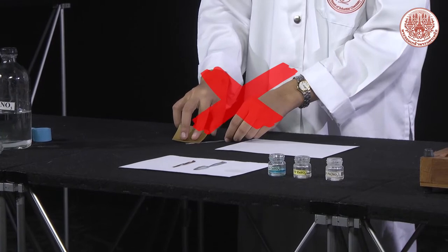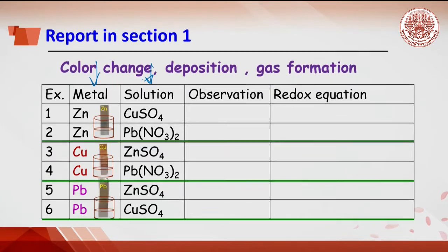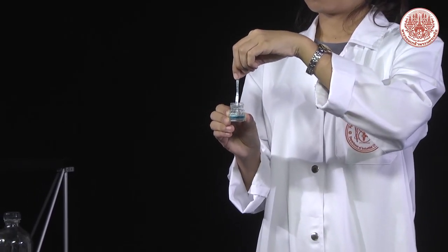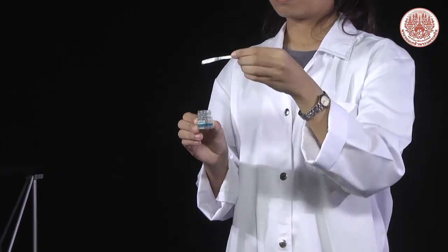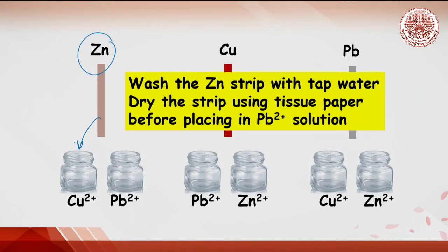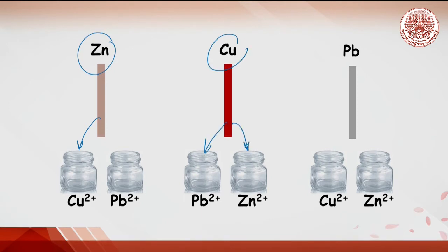Do not scratch the sandpaper on the bench. Place the metal strip into the solution. After 30 seconds, record the observation. The observation can be color change, deposition, or gas formation. For example, place the zinc strip into the copper solution. After 30 seconds, record the observation. Wash the zinc strip with tap water and dry before doing other experiments.